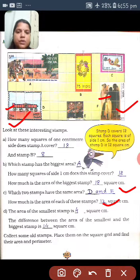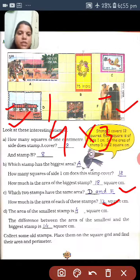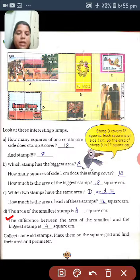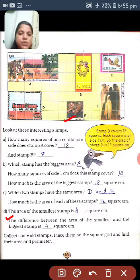Because length is 4 and breadth is 3. So 4 times 3 is 12. Next question: The area of the smallest stamp is? Which one is the smallest one? It is E. And what is the area of it? 4 square centimeters.